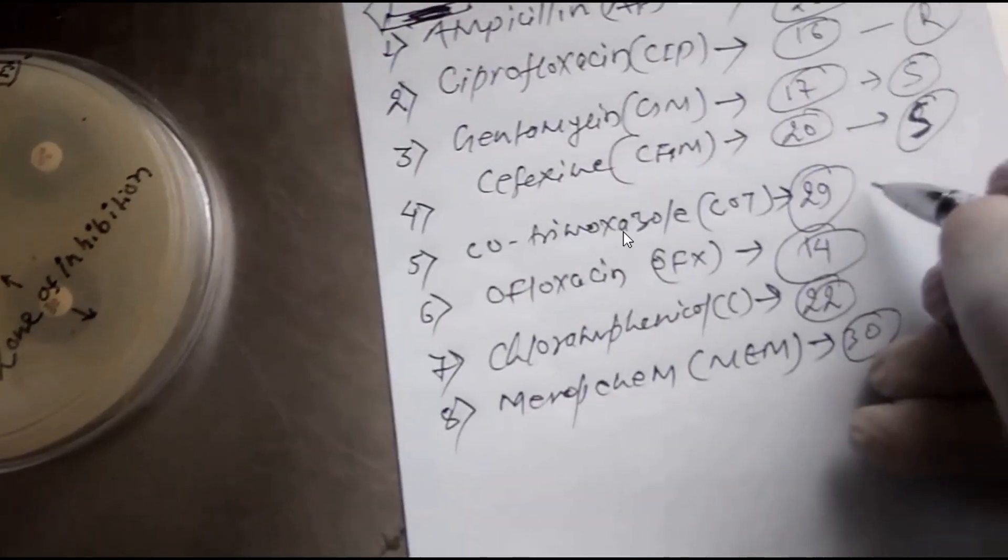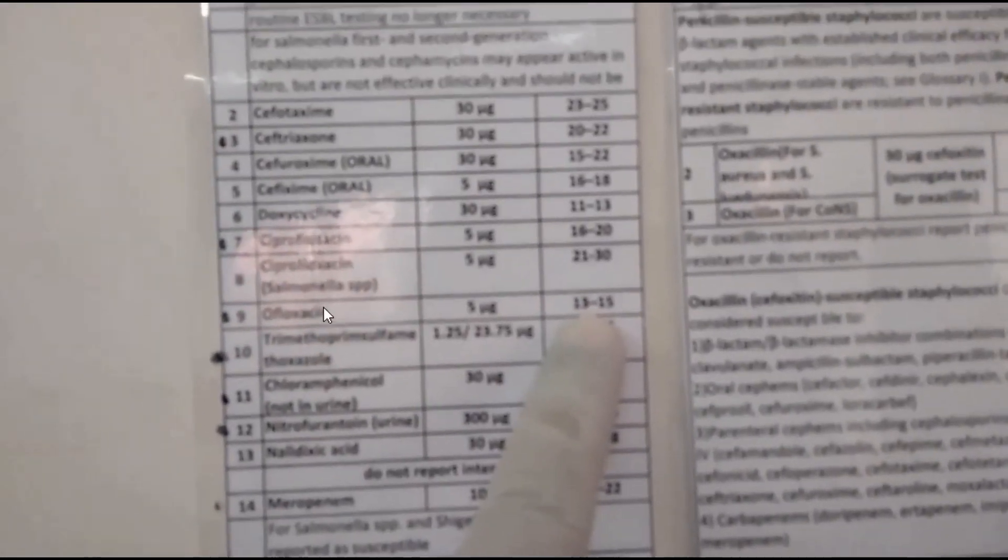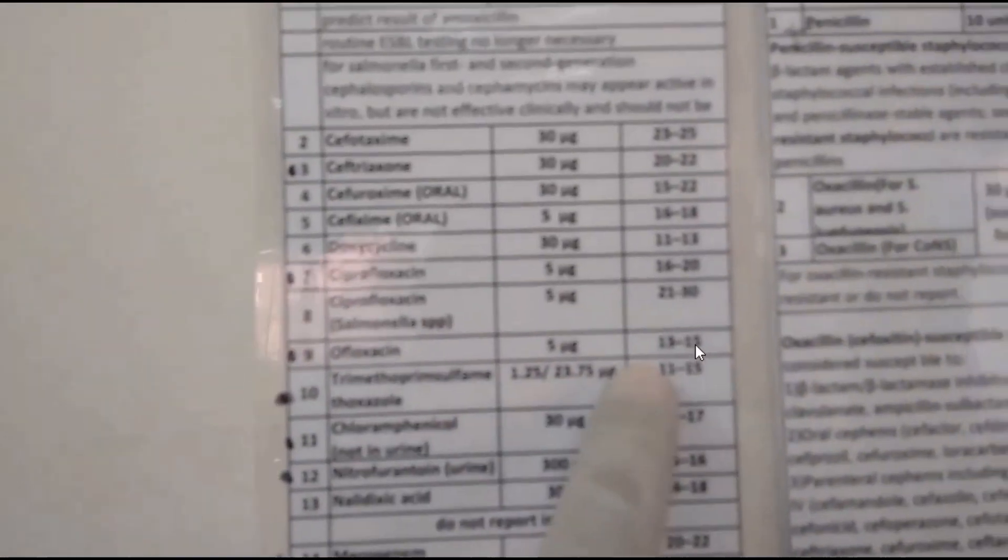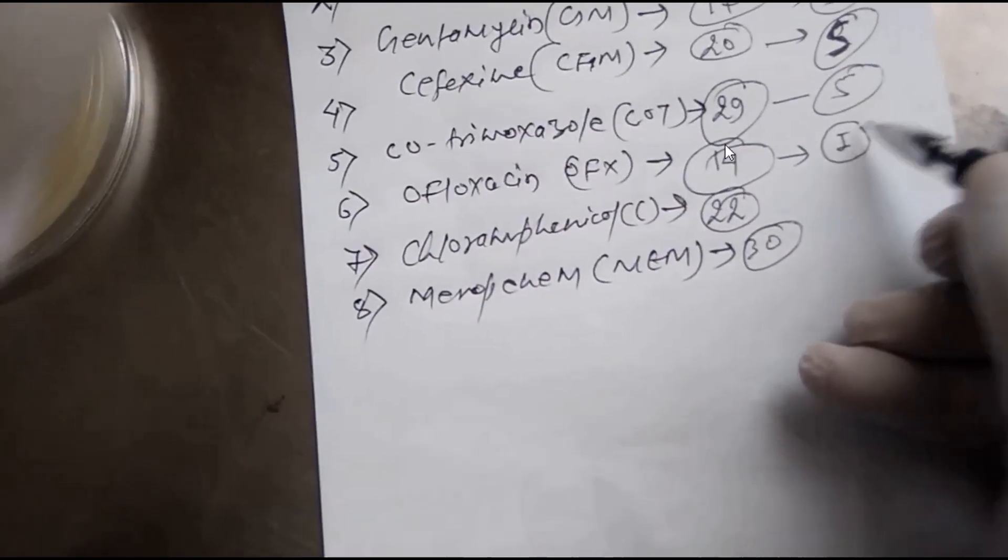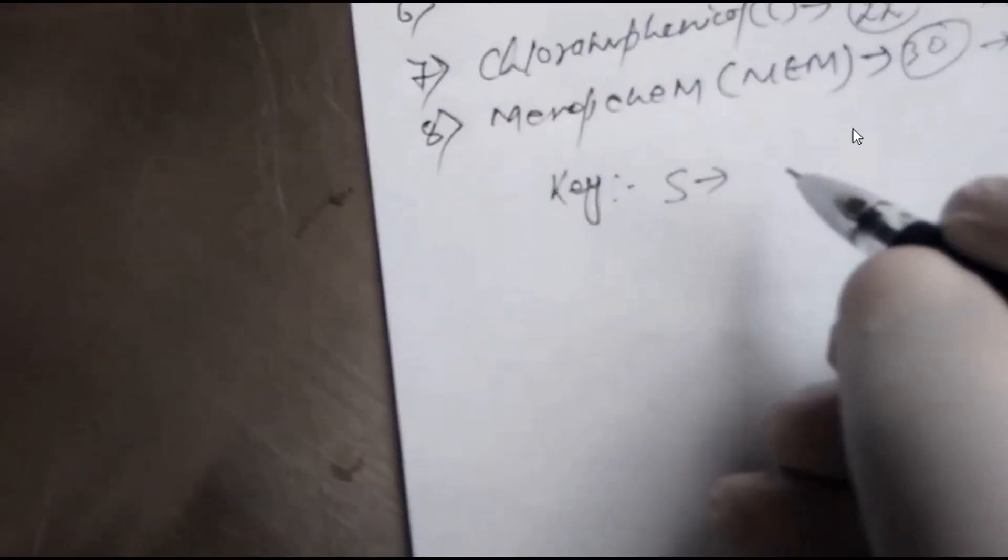For Cotrimoxazole, that is trimethoprim-sulfamethoxazole, it's sensitive. Now for Ofloxacin, this is in the intermediate zone, so that comes under intermediate. That's why I - that is intermediate. S for sensitive.